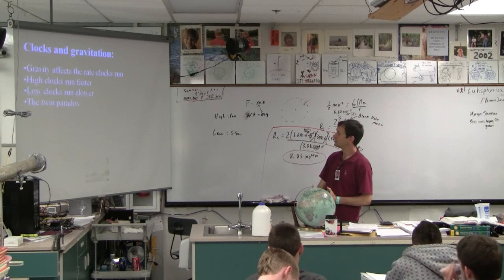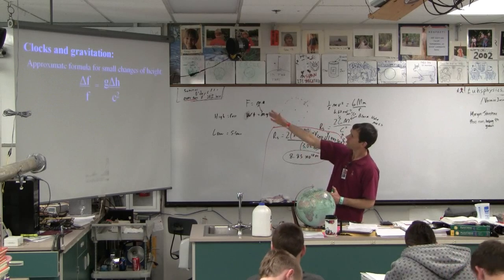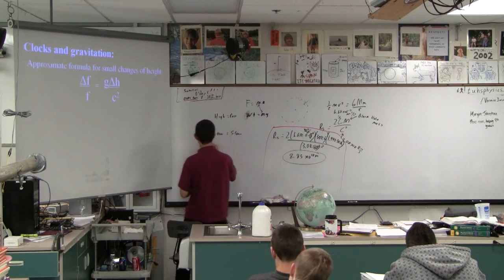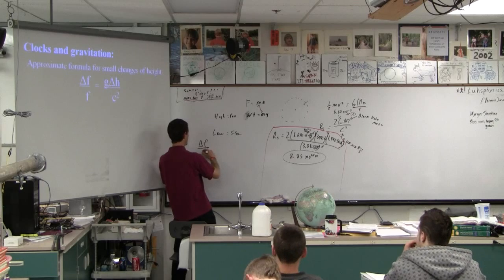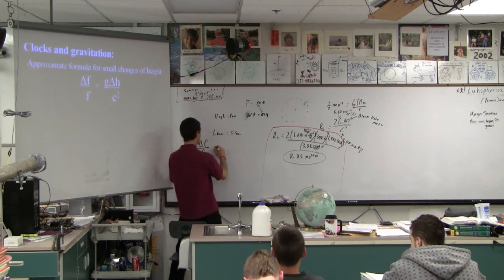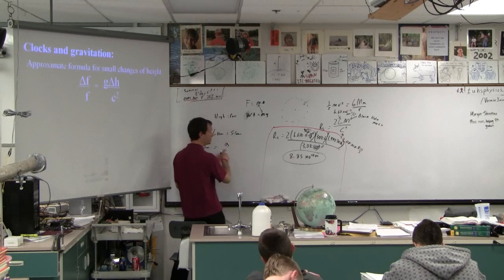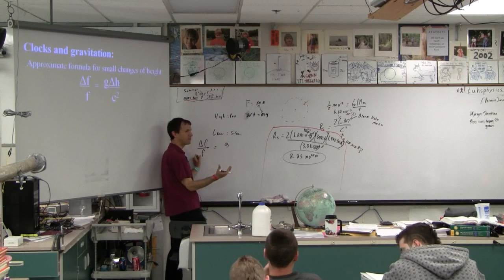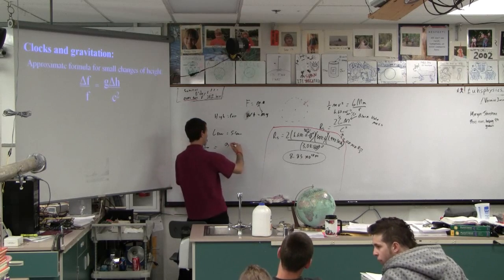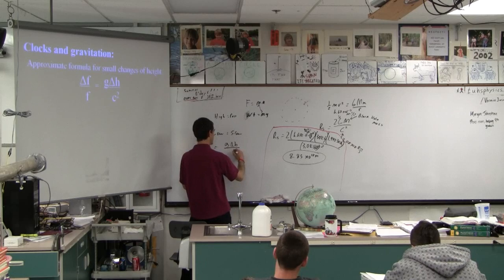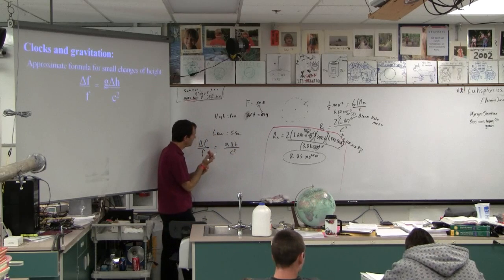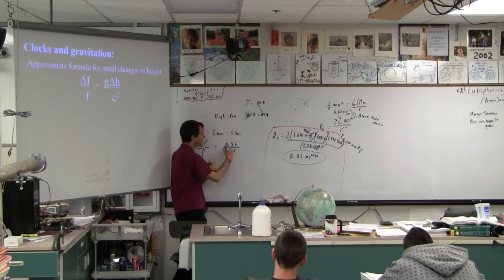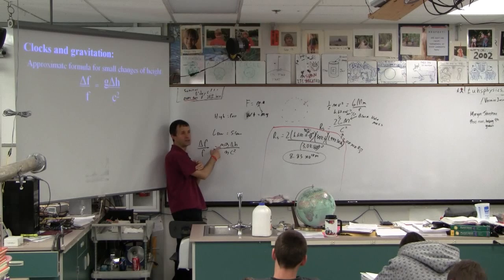And then here is the approximate formula for this, that the shift in frequency, right? So the change in frequency, and I think you have this in your note guide, is to the original frequency, right? As g times, and this g is not going to be like 9.8, it's going to be whatever the gravity is where you are. It could be millions of meters per second squared, like near a neutron star or something like that, right? Times whatever the change in height is. And again, this is over c squared.